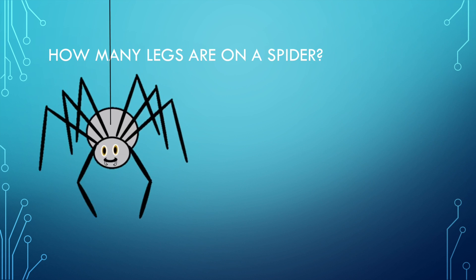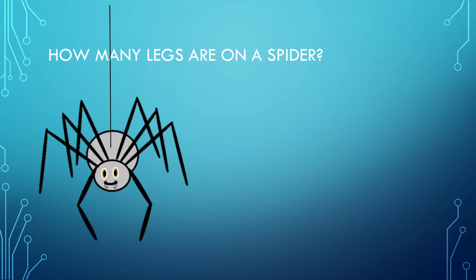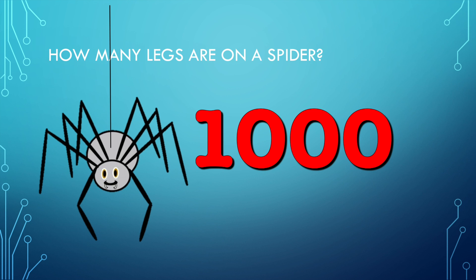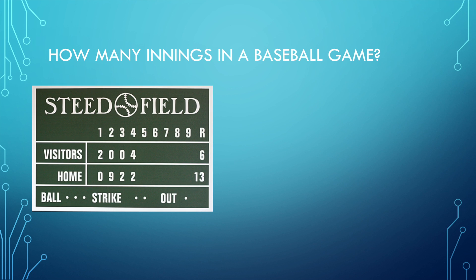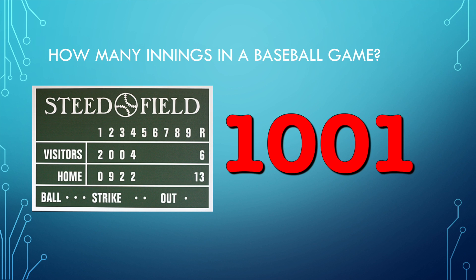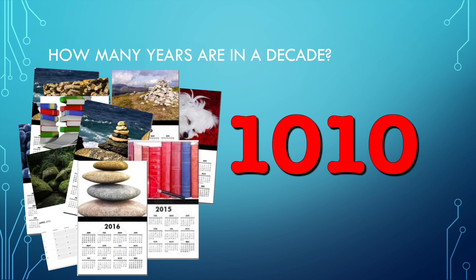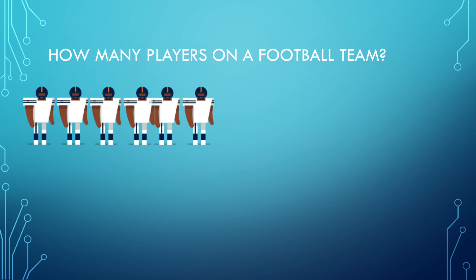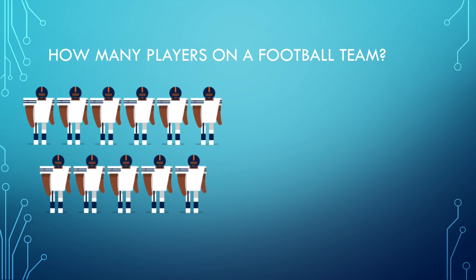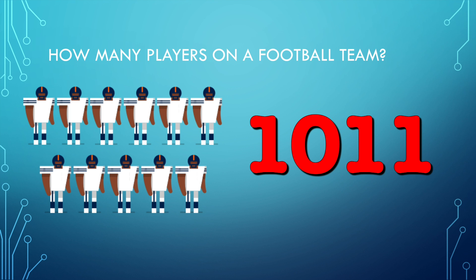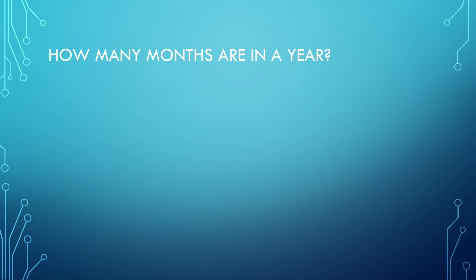How many legs are on a spider? One zero zero zero. How many innings in a baseball game? One zero zero one. How many years are in a decade? One zero one zero. How many players on a football team? One zero one one.